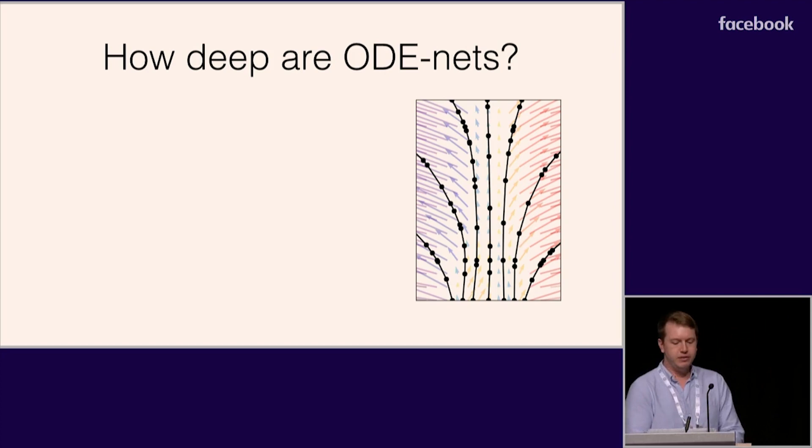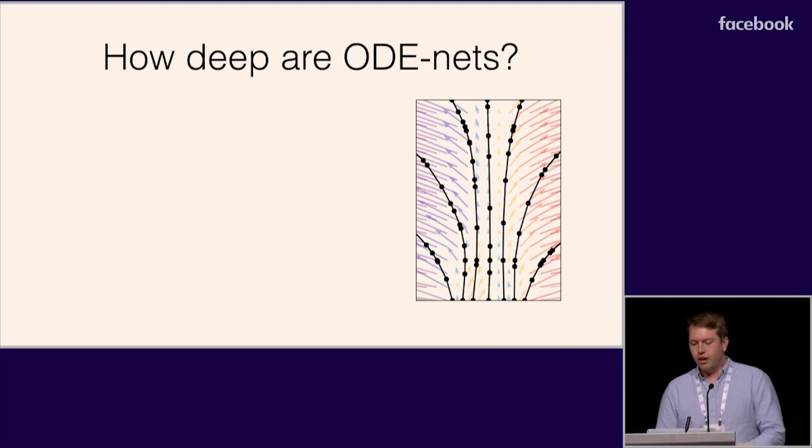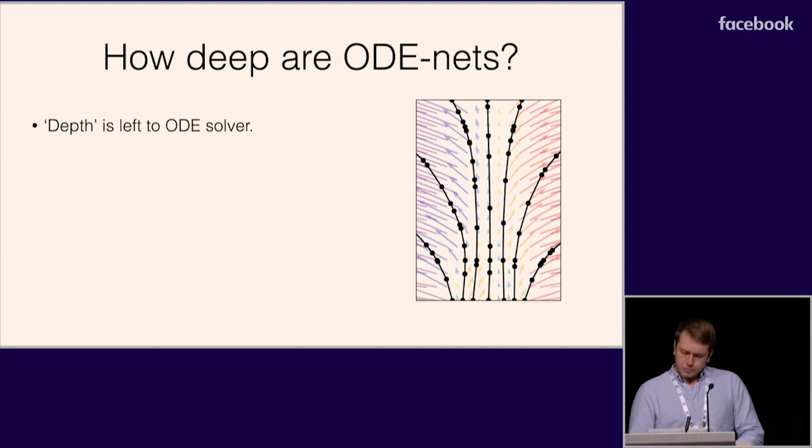So one interesting question is how deep are these models? The funny thing about ODE nets is that they don't have a fixed number of layers. The best analogy to depth in these models is the number of evaluations of the dynamics network that the ODE solver makes. So we don't actually have to specify the depth of these models. We just delegate that detail to the ODE solver. For instance, on the right, we show the trajectories corresponding to different inputs in a toy ODE net. The circles show evaluations by the solver. You can see that the simple dynamics in the center require fewer evaluations than the more complicated dynamics on the sides.